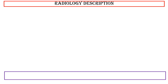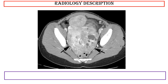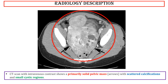Radiology description: This photo shows a CT scan with intravenous contrast showing a primarily solid pelvic mass with scattered calcifications and small cystic regions.